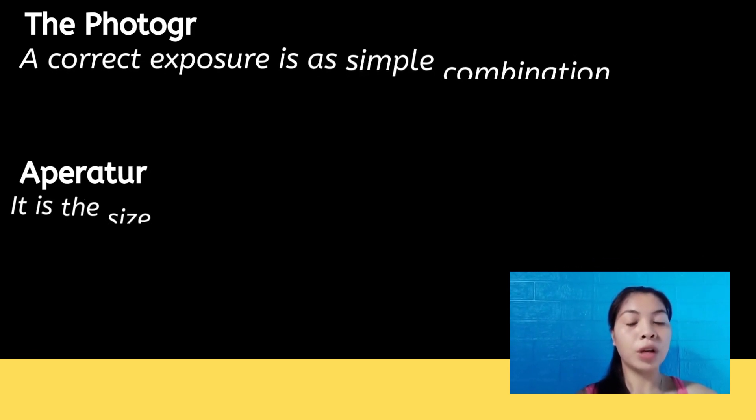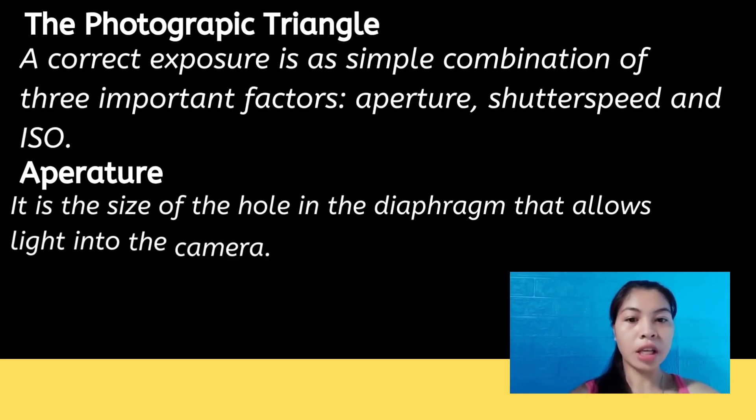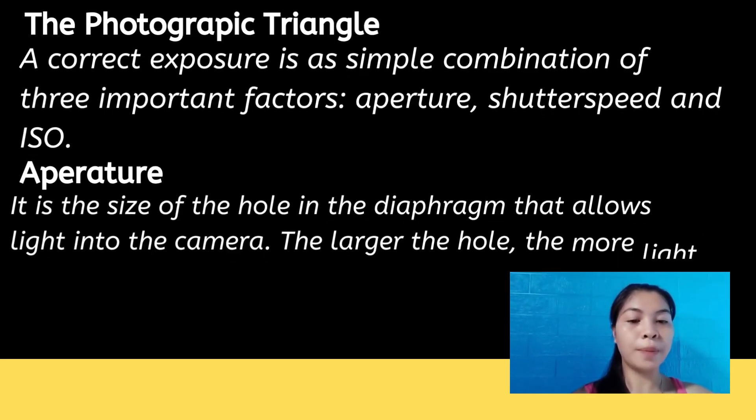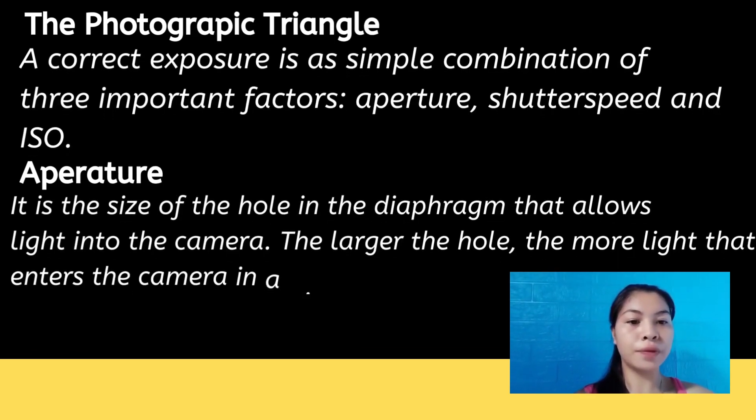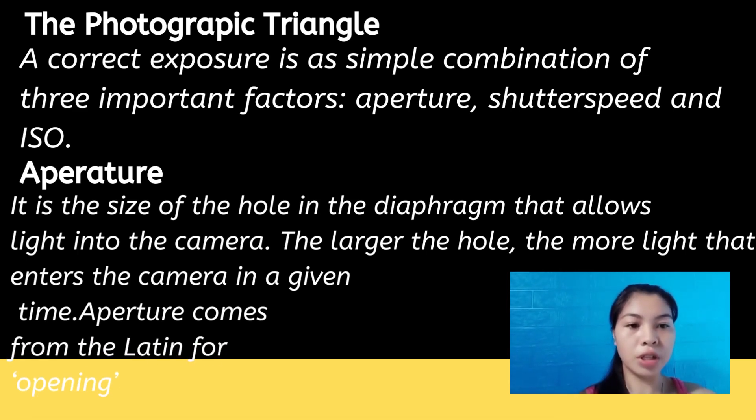The photographic triangle refers to the correct exposure — the proper combination of three important factors: aperture, shutter speed, and ISO.